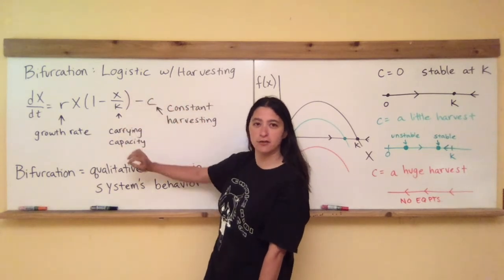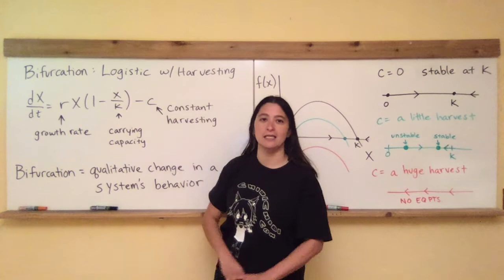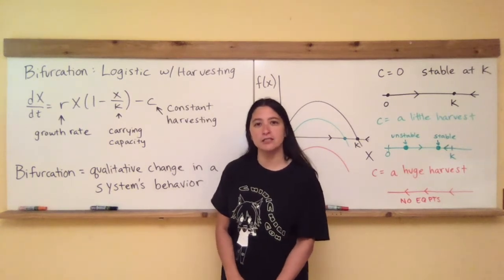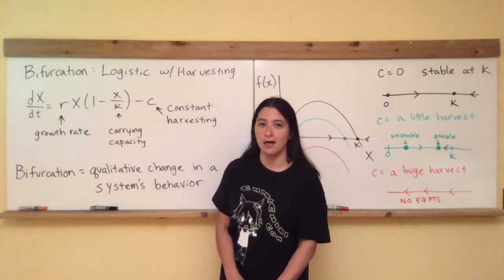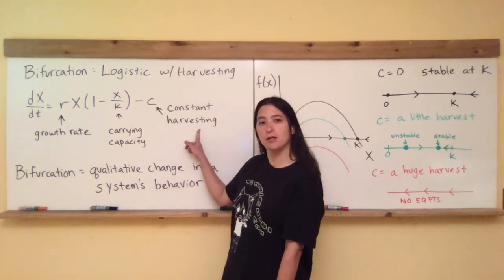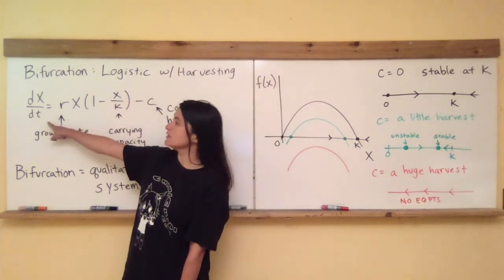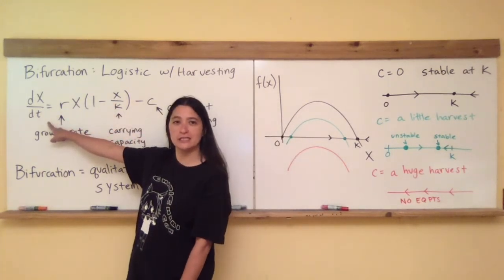Now what we're going to do is add an extra parameter where we're going to subtract away a constant c. What that represents is constant harvesting per unit time. So remember that in order to really interpret this harvesting term, we're going to have to go back and match it with what it's being equated to, which is dx/dt.